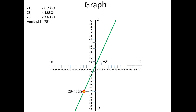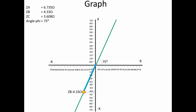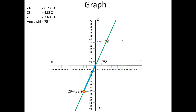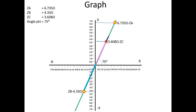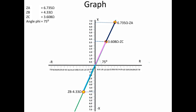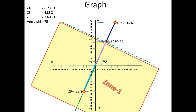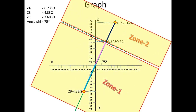Taking 0 as reference, first draw ZB. The value is 4.33 ohms, which is a reactance value, so take the point on the y-axis. For the generator, take minus because it is on the back side of the relay — draw the line below the reference line. Next, take 0 as reference and draw ZC (transformer reactance) on the positive quadrant above the reference line; its value is 3.608 ohms. Then draw ZA at 6.735 ohms in the positive quadrant. Now draw a perpendicular line on ZC, separating two parts: the lower part is Zone 1 and the upper part is Zone 2.